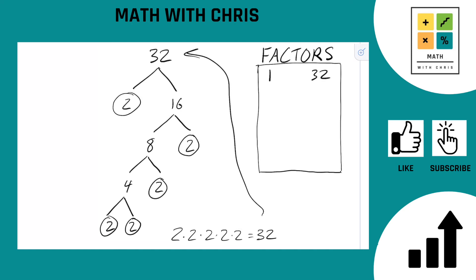Now we can bank all of the prime factors. There's only one in this case: 2. We also bank all the numbers we hit along the way anywhere in the factor tree — we've got 16, we've got 8, and we've got 4. So all of those get banked: 16, 8, and 4.